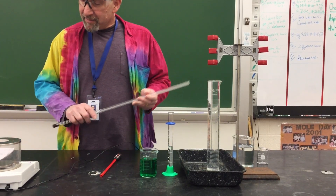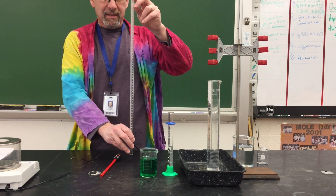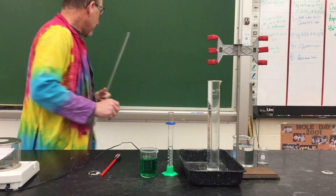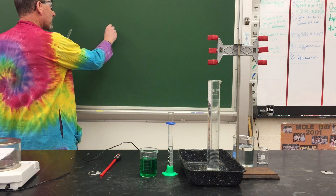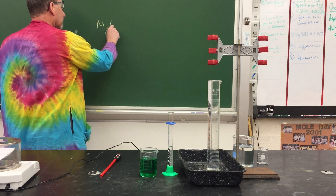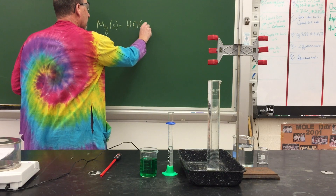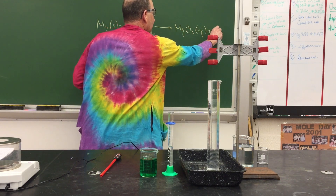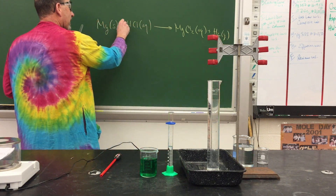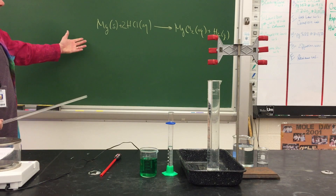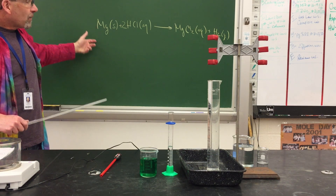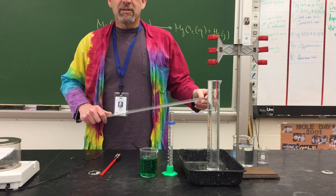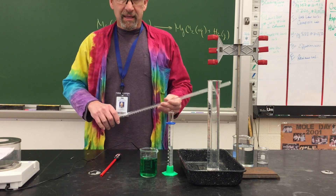Today we're going to do the magnesium and hydrochloric acid forming hydrogen gas experiment in a device called the Udometer, in order to measure the value of the universal ideal gas constant R. The reaction has magnesium metal and hydrochloric acid reacting to form magnesium chloride and hydrogen gas, balanced with a two in front of the HCl. We'll use magnesium as the limiting reactant, determine moles of hydrogen gas stoichiometrically, and plug into PV = nRT to calculate R.